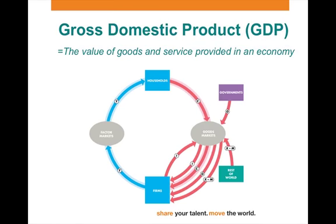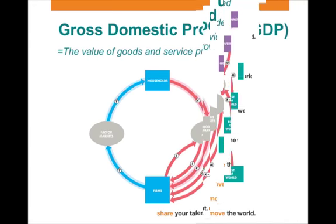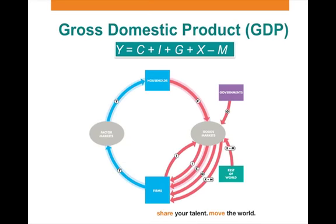The value of all goods and services provided in the economy is what we call gross domestic product. Another relevant equation in economics is Y equals C plus I plus G plus X minus M. Our national income consists of consumer expenditure, investments, government spending, and net exports.